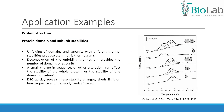Regarding protein structure, NanoDSC can provide information about protein domains and subunit stabilities. Unfolding of domains and subunits with different thermal stabilities produces asymmetric thermograms. The deconvolution of the unfolding thermogram provides the number of domains or subunits. A small change in sequence or other alteration can affect the stability of the whole protein or the stability of one domain or subunit.